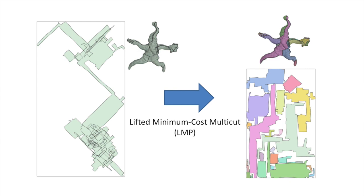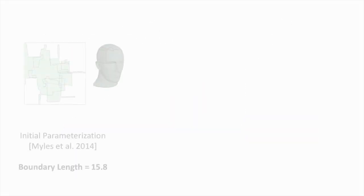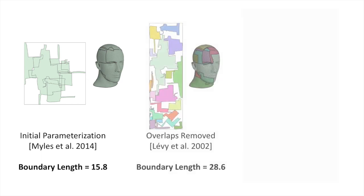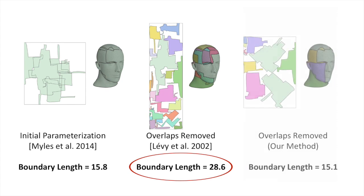We cast overlap removal as a minimum cost multi-cut problem and solve it using an efficient approximation method. Our overlap removal method produces bijective atlases with significantly shorter boundaries than those produced by previous techniques.